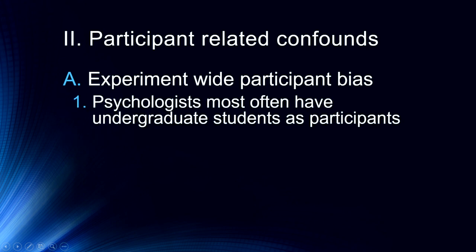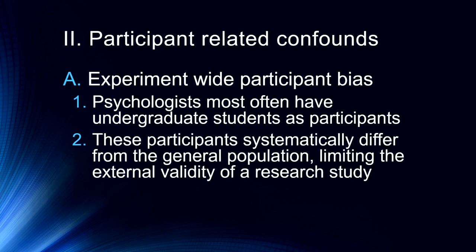So we'll start with experiment-wide bias. One of the biggest problems psychologists have is we most often have undergraduate students as our participants. They are oftentimes required to participate in experiments as part of their coursework. And as a result, we end up with thousands of studies with thousands of undergraduate students. But the problem is those students aren't like everyone else — they automatically, systematically differ from the general population because they're undergraduate students.